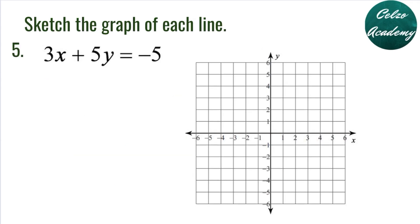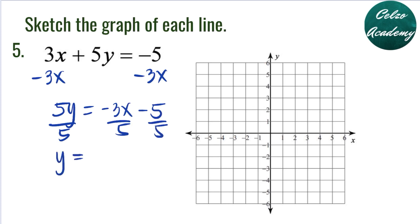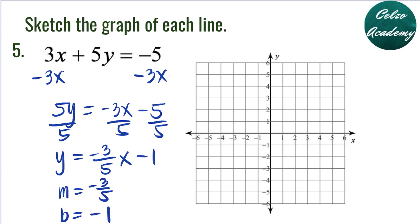Question number 5: 3X plus 5Y is equal to negative 5. Isolating the variable Y, we subtract 3X from both sides. 3X minus 3X is 0, so we have 5Y equals negative 3X minus 5. Dividing each term by 5, Y equals negative 3 over 5 times X. Negative 5 divided by 5 is negative 1. The slope is negative 3 over 5 and the Y-intercept is negative 1.